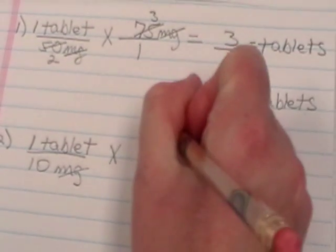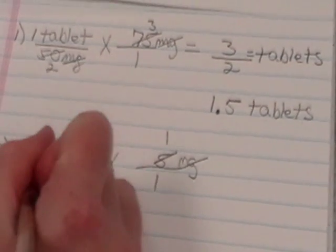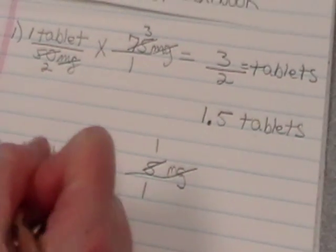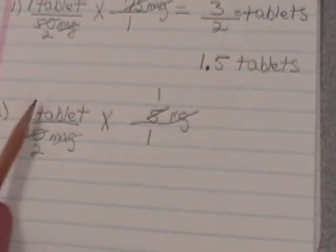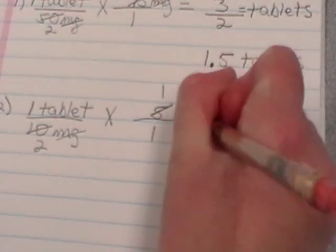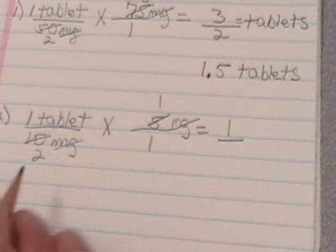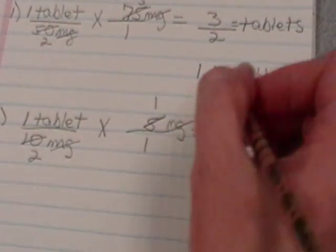5 will go into 5 one time. 5 will go into 10 two times. Then we need to multiply across the numerator. 1 times 1 equals 1. 2 times 1 equals 2.